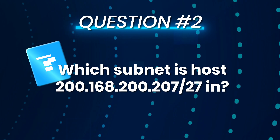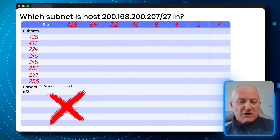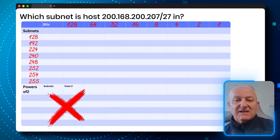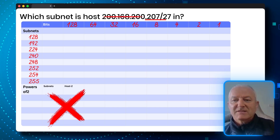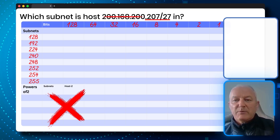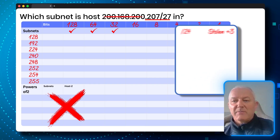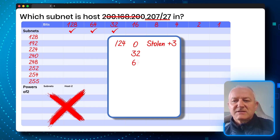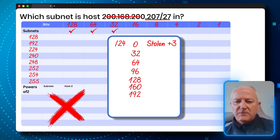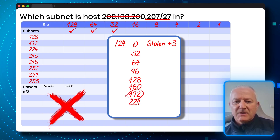Next question: which subnet is host 200.168.200.207/27 in? The full chart is written out here, just as you'd use it in the exam. We're subnetting in the last octet and need to find where host 207 is at slash 27. Normally slash 24, so we've stolen three bits — tick one, two, three. Our subnets go up in increments of 32: 0, 32, 64, 96, 128, 160, 192, 224. Host 207 is in the 192 subnet, so the answer is 200.168.200.192.